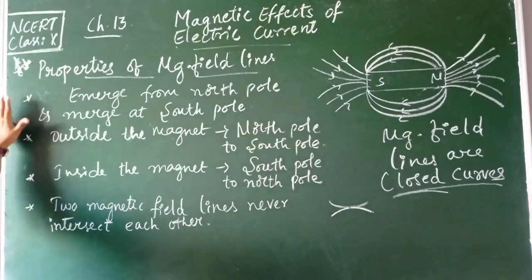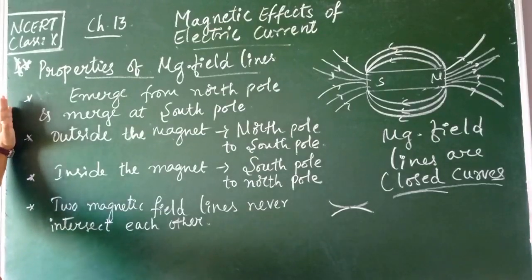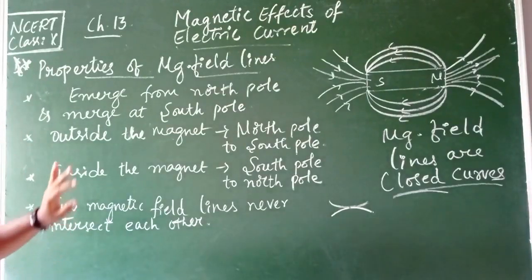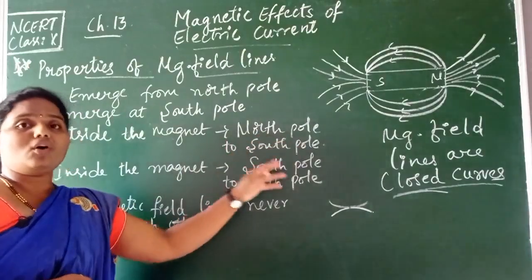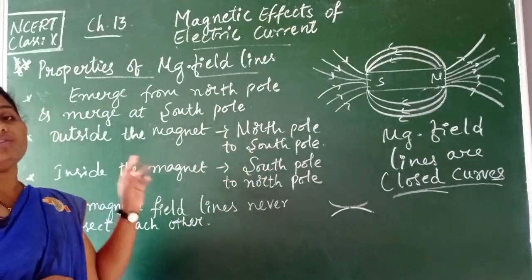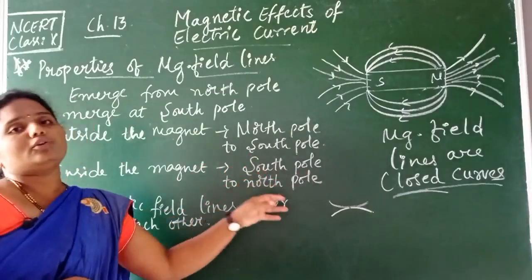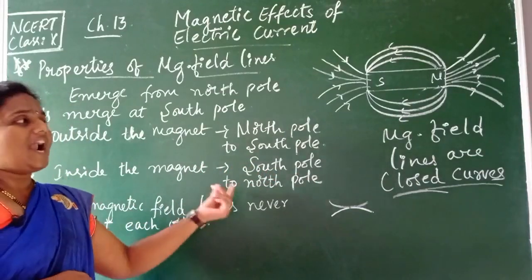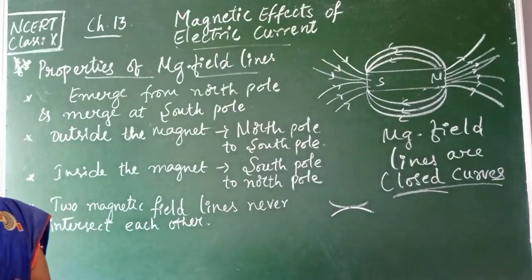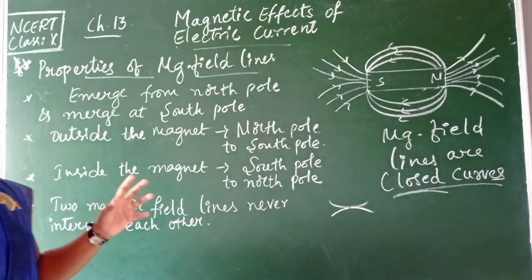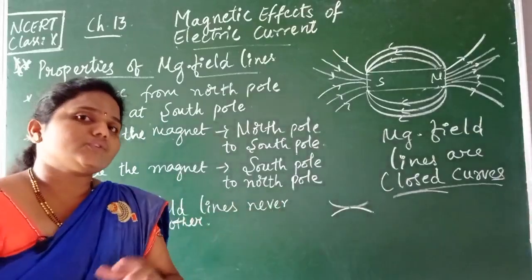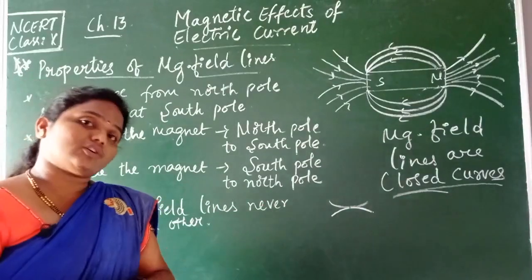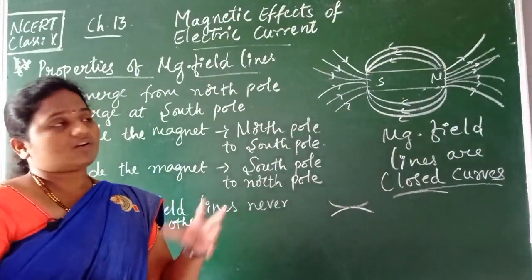The properties of magnetic field lines are very important and must be learned carefully. Outside the magnet, the lines emerge from the north pole and merge at the south pole. Inside, they move from south pole to north pole. No two magnetic field lines cross each other; if they did, they would give two directions at that point, which is not possible. The lines are closed curves, and their relative strength is determined by how close together they are.